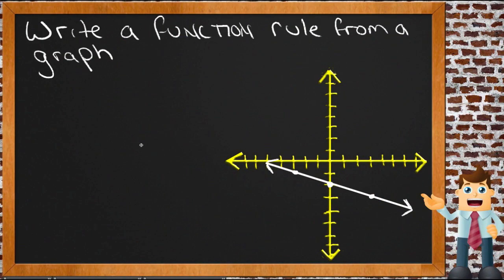So you've been asked to write a function rule for a linear function whose graph has the slope m of negative one-third, so m is negative one-third, and y-intercept, which is b of negative two.